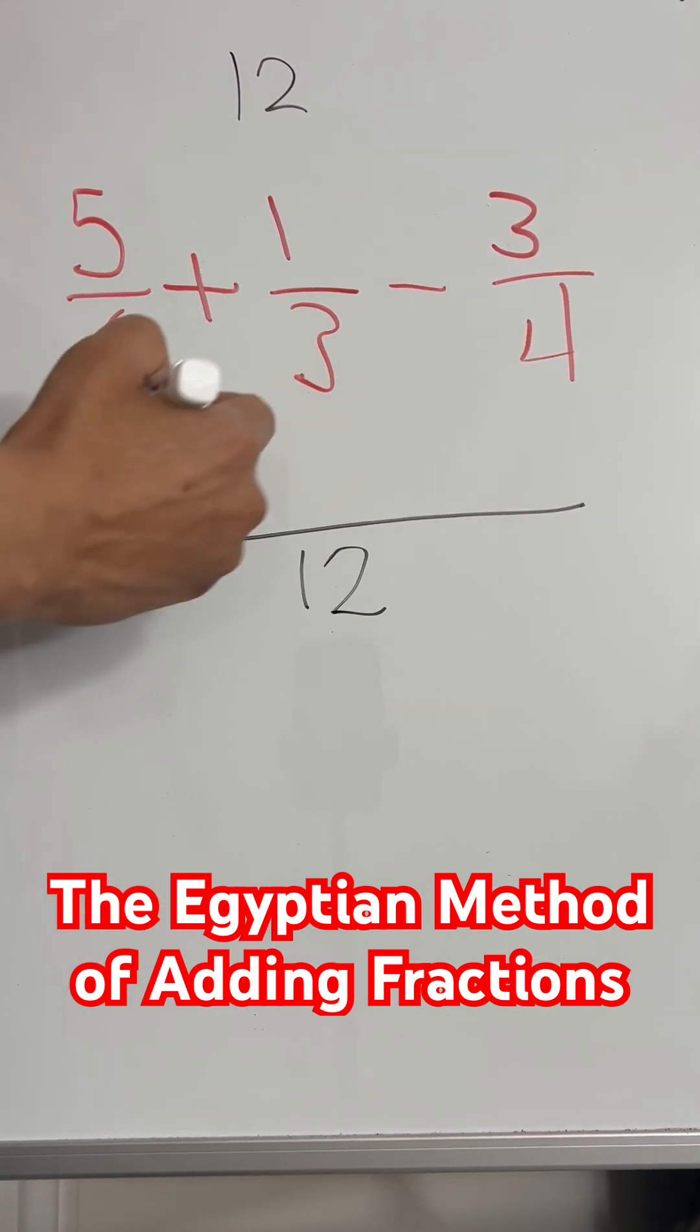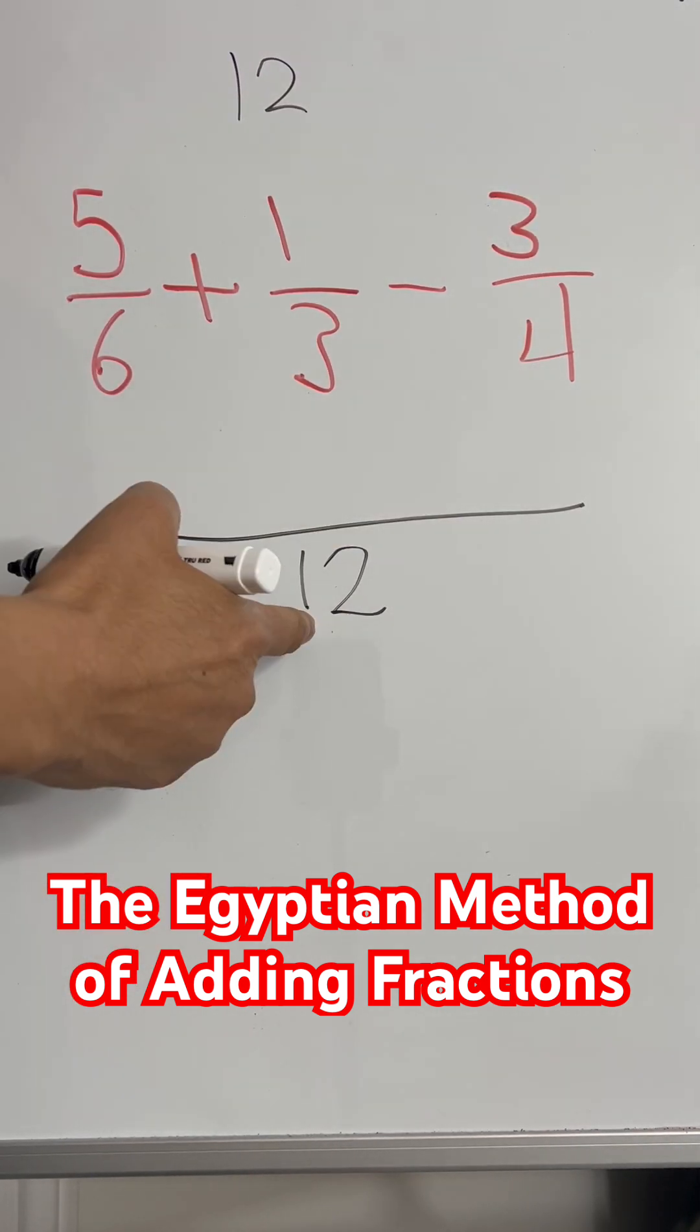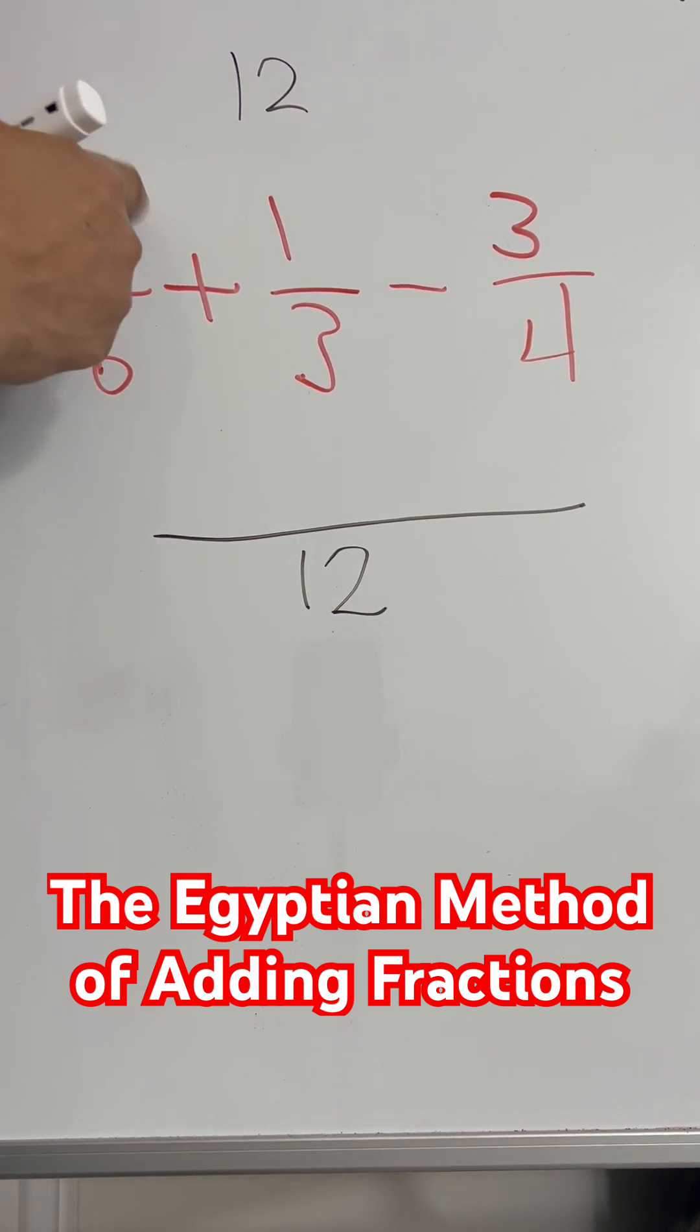Now, instead of multiplying each fraction by the same factor on top and bottom, just go 12 divided by 6. That will tell you what you have to multiply the top by.